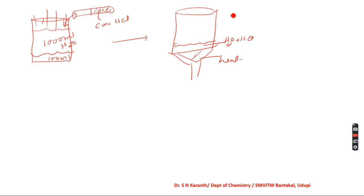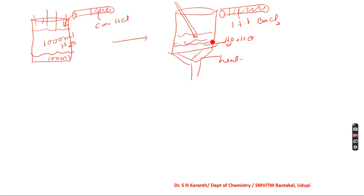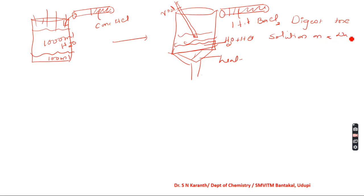To this hot solution, introduce barium chloride — around one test tube full of barium chloride is added slowly with stirring using a glass rod. Then digest the solution on a water bath for about 30 minutes.